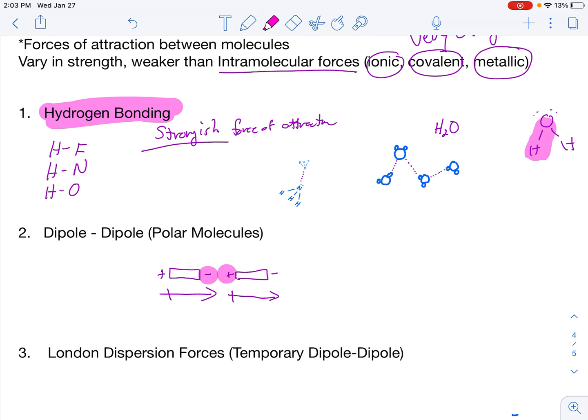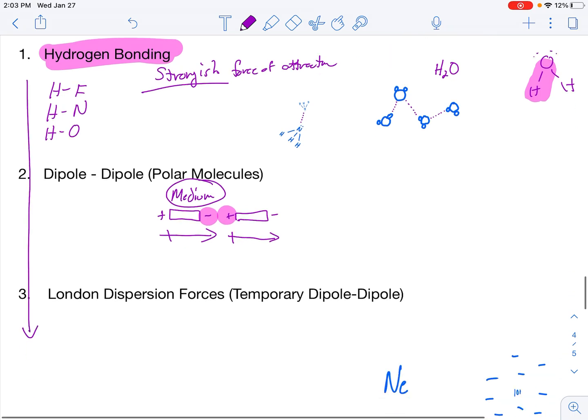So for dipole-dipole, it's very similar to hydrogen bonding. However, it's not quite as strong. We're going to put the strength as a medium strength. Not quite as powerful. So the negative region of one polar molecule is attracted to the positive region of the adjacent molecule. No big deal. Notice how I'm going down in strength. So I'm going from strong-ish to medium.